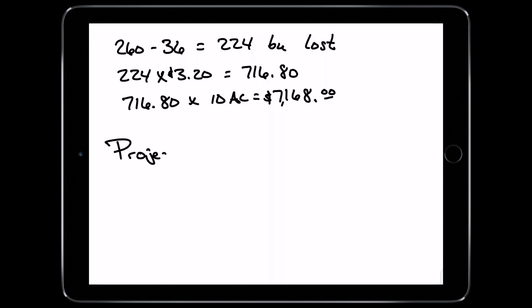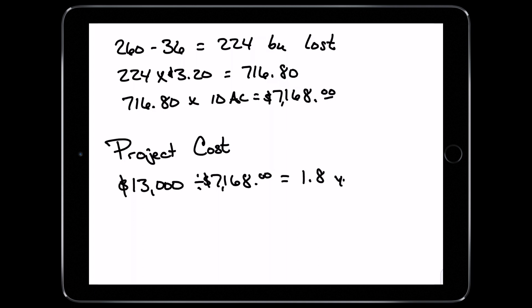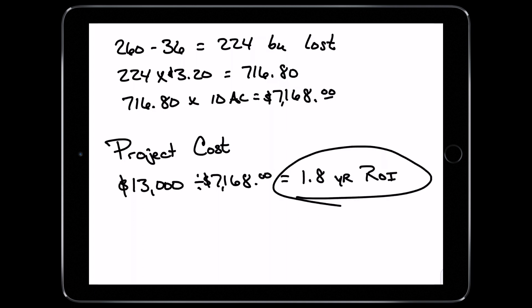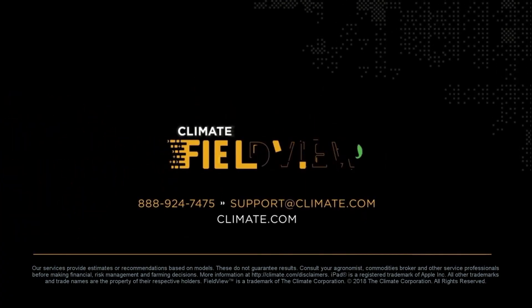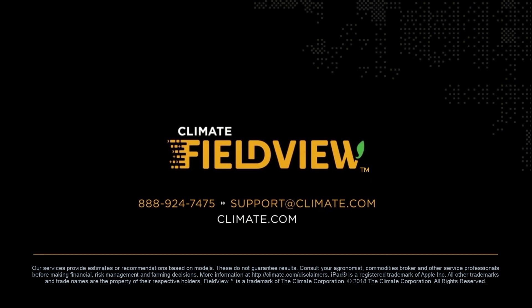The surface drainage project cost $13,000 divided by the loss per year equals a 1.8-year ROI. This is just one example of being able to use the tools in FieldView to help you determine potential areas of improvement and development for your farm. For more stories learned on this field, check out the next video in the series.